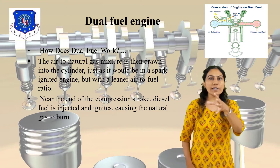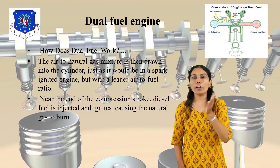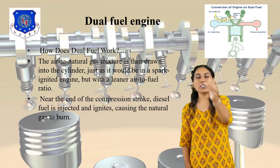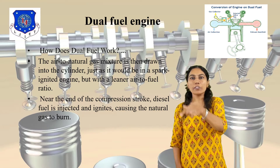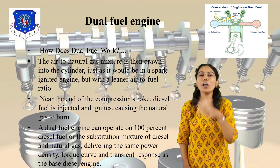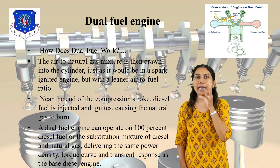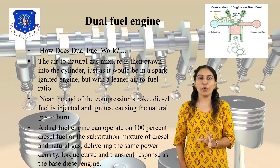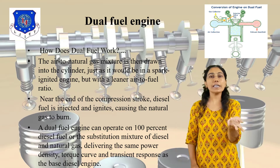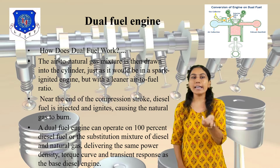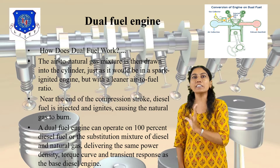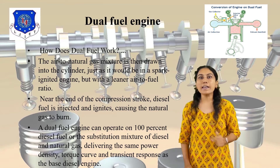You can see the diagram showing how it works: first air and diesel enter, then the natural gas is added. The engine continuously operates in this manner. The dual fuel engine can operate on 100% diesel fuel, or on a substitution mixture of diesel and natural gas, delivering the same power density, torque curve, and transient response as a base diesel engine.